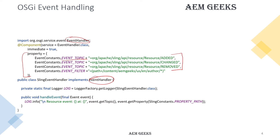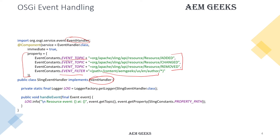If you want to listen to those events under a particular path, you can add event.filter and define a key-value pair like path equals this value. That means it will be listening to any resources added under the author path, like my site and author page. If you add, remove, or change anything under that path, this handler will be listening.